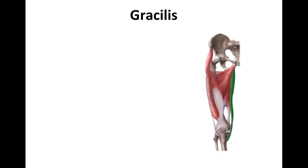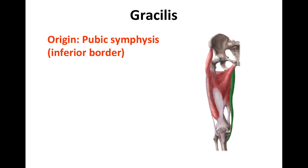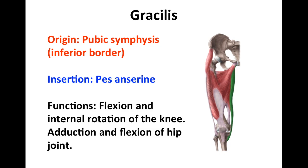The point of origin for gracilis is the inferior border of the pubic symphysis. It inserts in the pes anserinus, which is in the medial aspect of the tibial tuberosity, and its function is flexion and internal rotation of the knee, and it can also adduct and flex the hip joint.